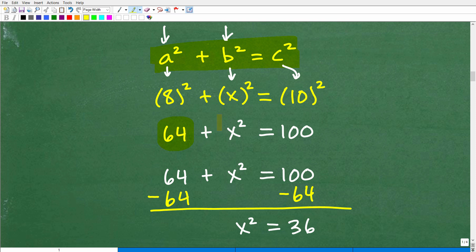Plus X squared is just X squared. And 10 squared is what? 100. 10 times 10. So now I need to go ahead and solve this basic quadratic equation. What we want to do here is get the X squared on one side of the equation. So I can subtract 64 from both sides of the equation, and I'm left with X squared is equal to 36.